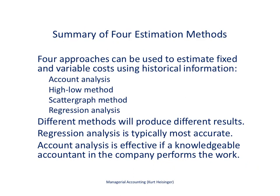This slide summarizes the four cost estimation methods covered in four separate videos. There are essentially four different approaches to estimating fixed and variable costs using historical information: account analysis, the high-low method, the scatter graph method, and regression analysis. Different methods do tend to produce different results, but most experts would agree that regression analysis typically results in the most accurate information.